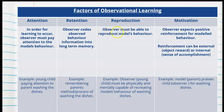Reproduction is next, where the observer must be able to reproduce the model's behaviour. The observer — the young child in this example — must be physically and mentally capable of creating the modelled behaviour of washing the dishes. The last step of the process is motivation, where the observer will expect some sort of positive reinforcement for the modelled behaviour. This reinforcement can be external, such as an object reward from somebody else, or it can be an internal reward, such as a sense of accomplishment.